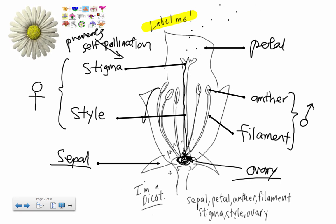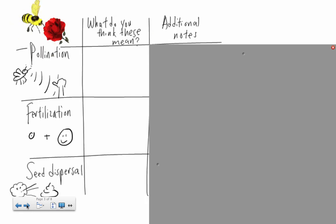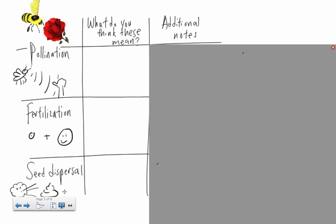We're going to talk a little bit later about what happens when the pollen actually lands on the ovary. Remember, this is a dicot plant, and these are the things you have to be able to label. These three terms - pollination, fertilization, and seed dispersal - are not to be confused with each other.